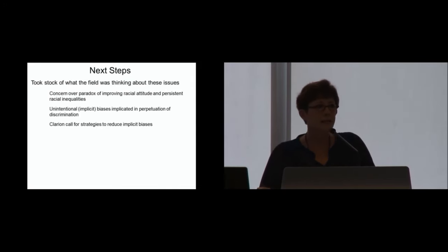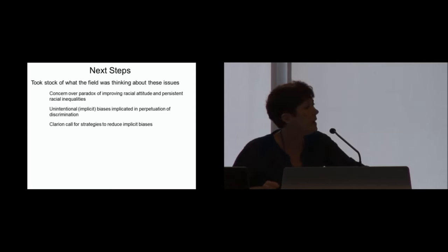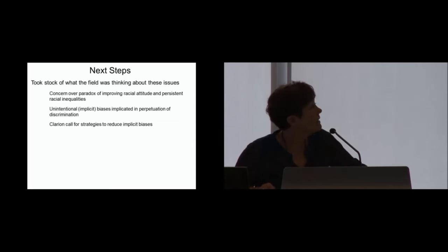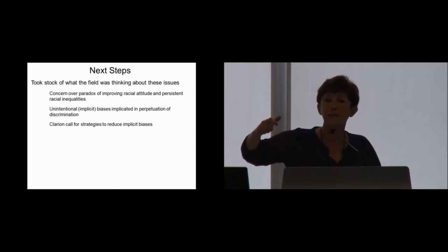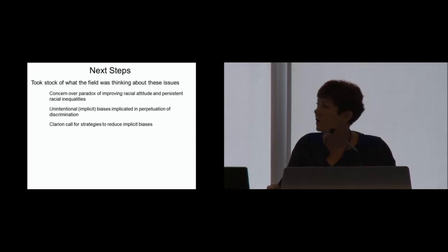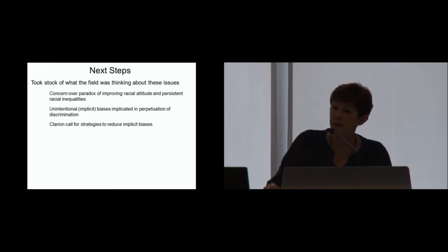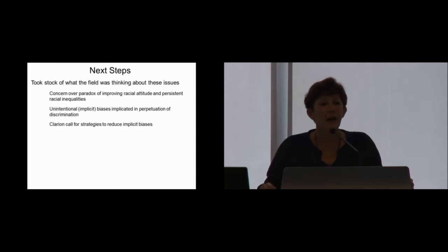So what were the next steps? Well, I tried to take stock of what the field was thinking about with regard to these issues. Much like me, they were deeply concerned about the paradox of improving racial attitudes and persistent racial inequalities. These unintentional, what often have been called implicit biases, I called them automatic processes early in my career, were implicated in the perpetuation of discrimination. You saw that, in fact, they predicted, in important contexts, discriminatory outcomes. And there was a clarion call for strategies to reduce implicit bias. So I wasn't the only one who was concerned about these things. August bodies like the National Science Foundation, the National Institutes of Health, the National Academy of Sciences were joining the chorus in the call for reduction of implicit biases.